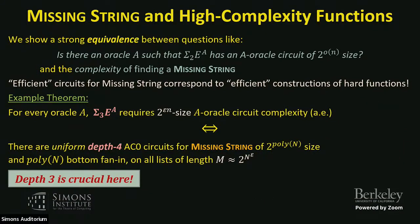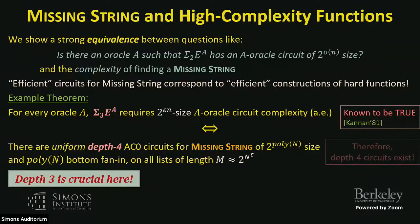Moving up to Sigma_3^E — which contains E^{Sigma_2^P} — we get an equivalence with depth-4 circuits, and that's known to be true. So the lower bound relativizes: depth-4 circuits for missing string exist. We know depth-2 does not exist, and depth-4 does exist. Depth 3 is the sweet spot we want to understand.